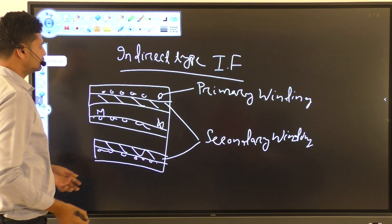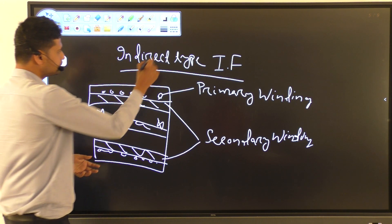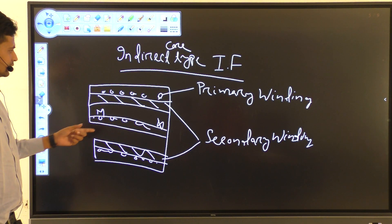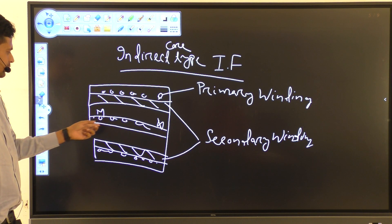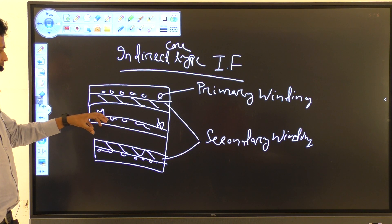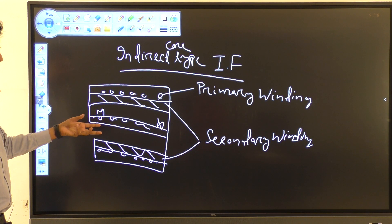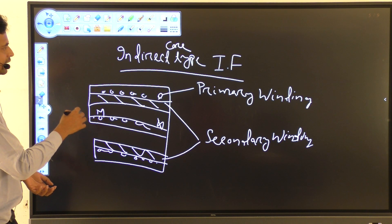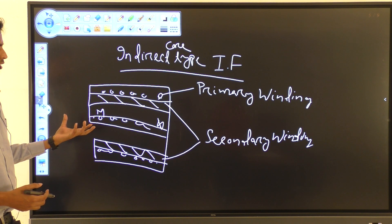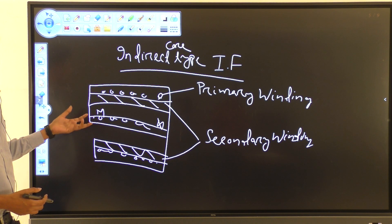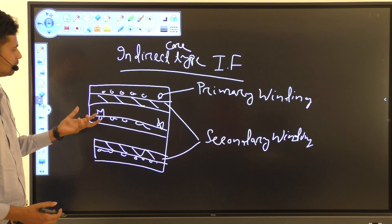Now let's discuss the indirect core type induction furnace. In this type, there is a primary winding and a secondary winding, and in between there is a heating element where metal pieces are heated. The heating is very uniform because the indirect core type induction furnace behaves like radiation heating — similar to how an oven heats things. It is a very convenient and safe method of heating.